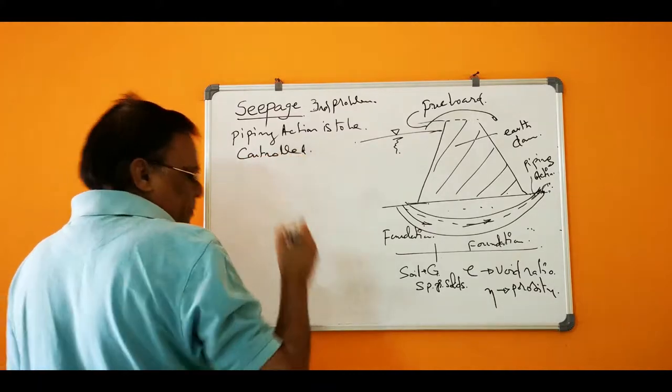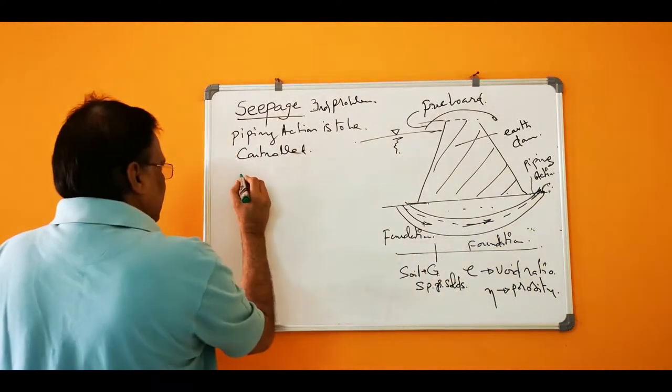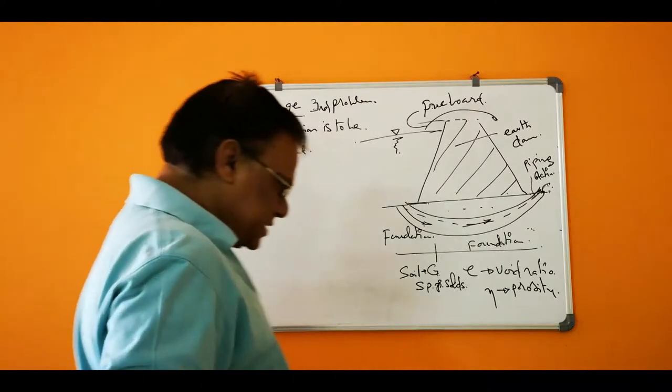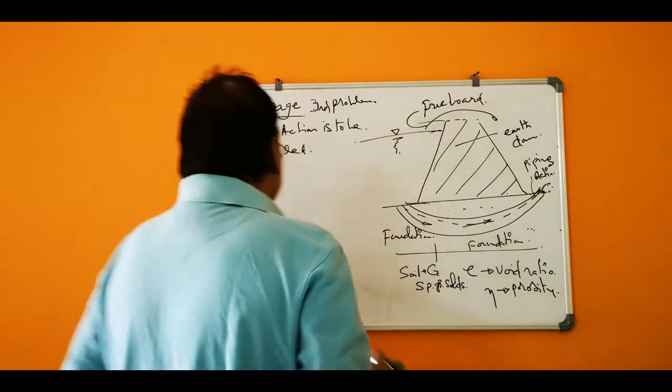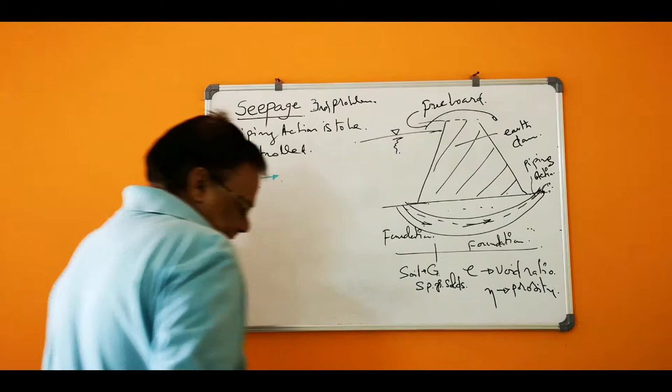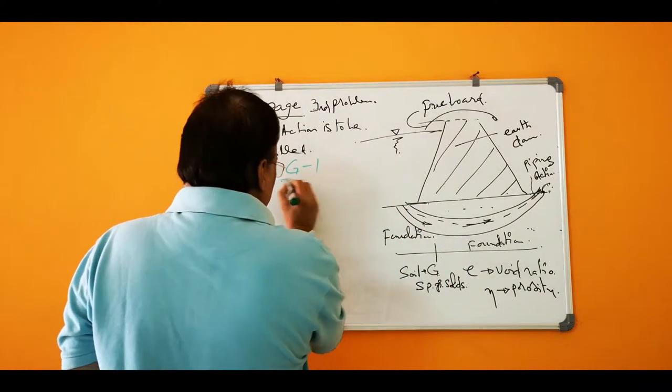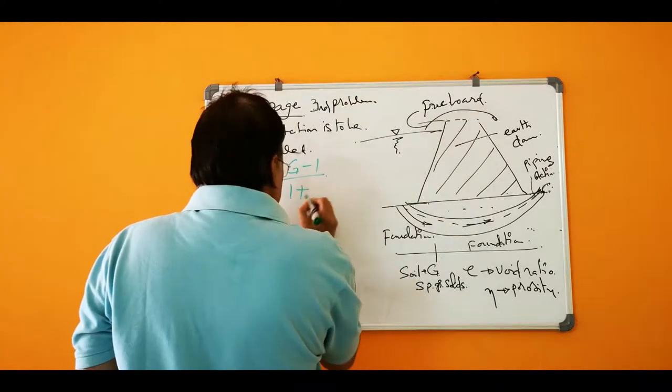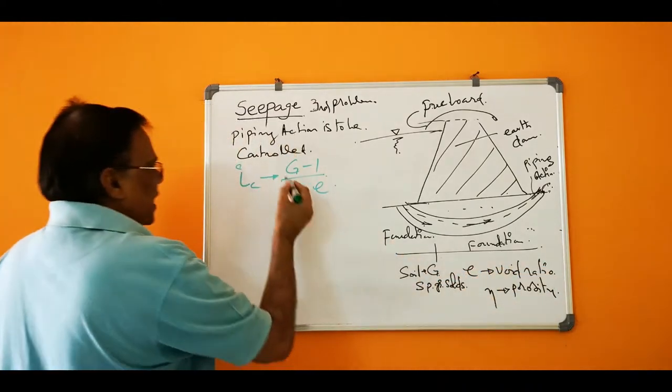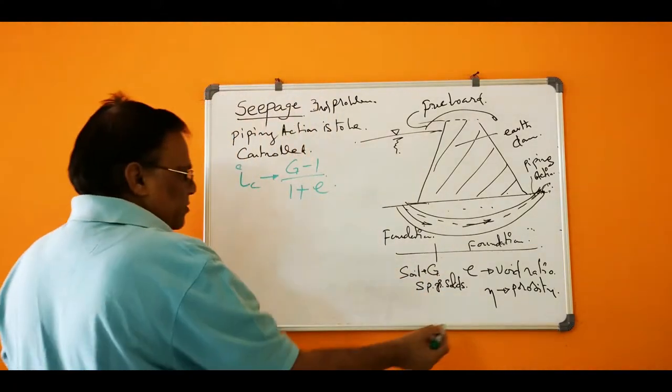It depends on certain parameters. Then we see that IC critical gradient, what is the critical gradient which causes the piping action. The critical gradient is given as G minus 1 by 1 plus E. E is the void ratio and G is the specific gravity of solids, nu is the porosity.